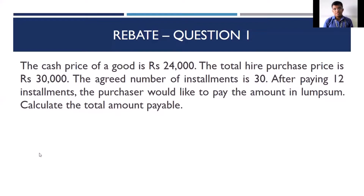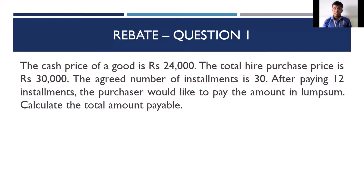We've got a question where we've been asked to calculate — the question goes like this: the cash price of a good is rupees 24,000, the total hire purchase price is rupees 30,000, the agreed number of installments is 30, and after paying 12 installments the purchaser would like to pay the amount in lump sum.